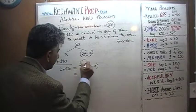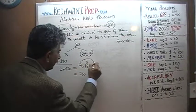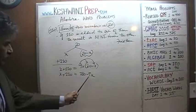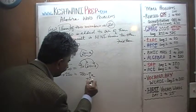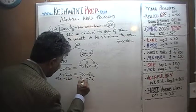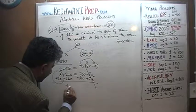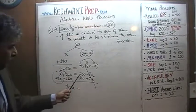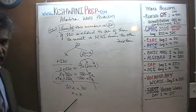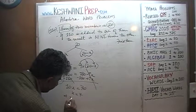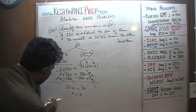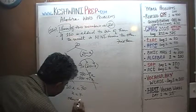9 times 20 is 180, and 9 times X is 9X. Bring 9X to the left and 110 to the right: 10X equals 180 minus 110, which is 70. Therefore X equals 7. The other number is 20 minus 7, which is 13.